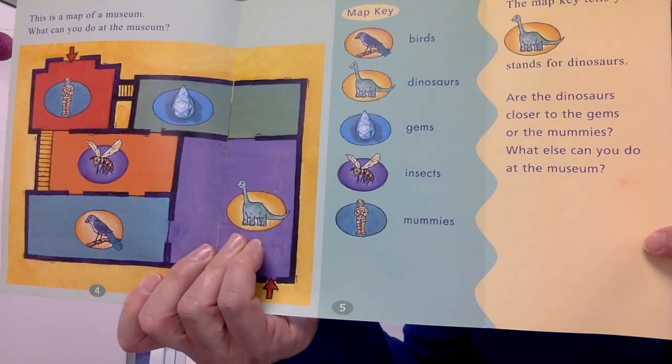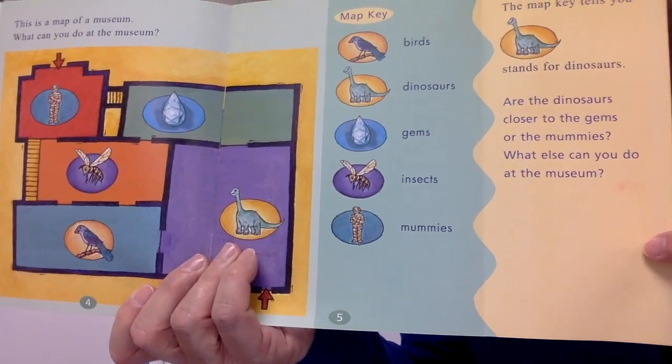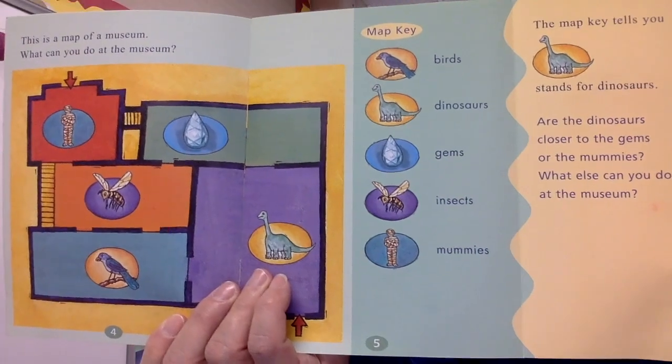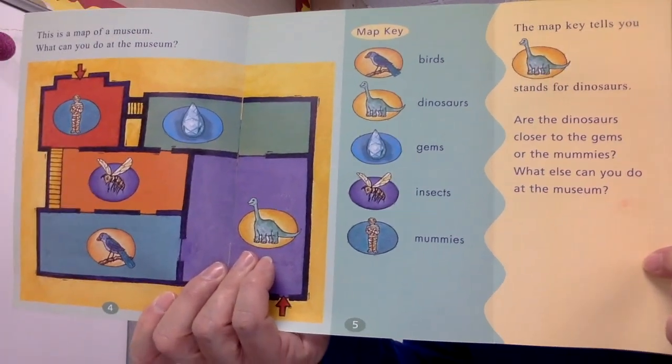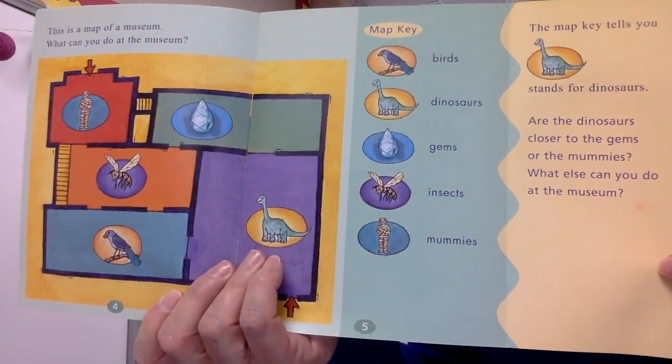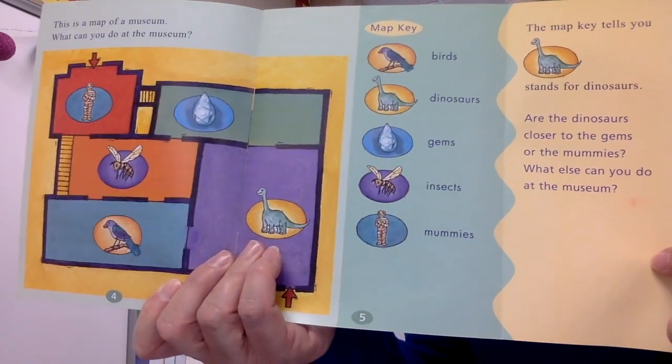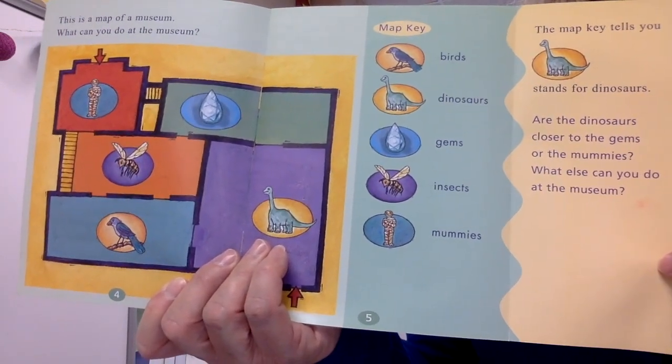Birds, dinosaurs, gems, insects, and mummies. It tells you exactly what's there. The map key tells you that the dinosaur stands for dinosaur. Are the dinosaurs closer to the gems or the mummies?